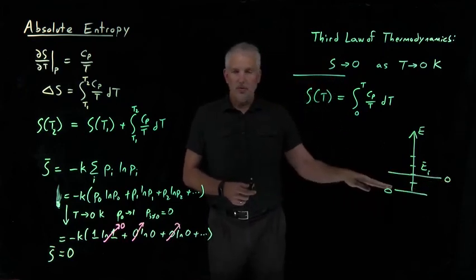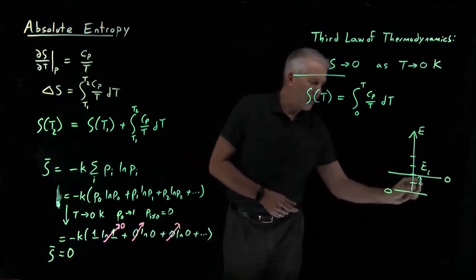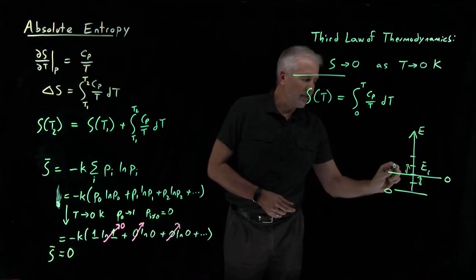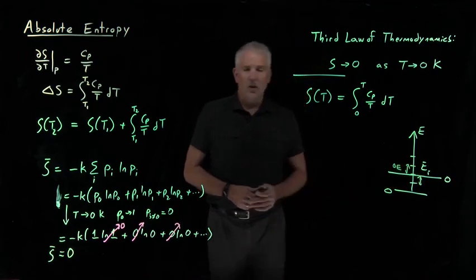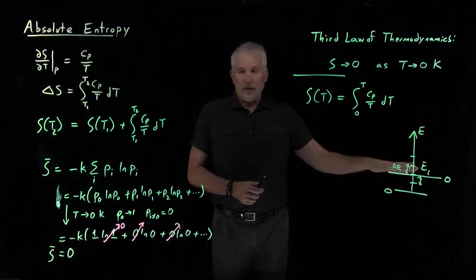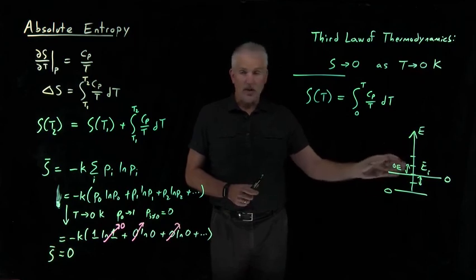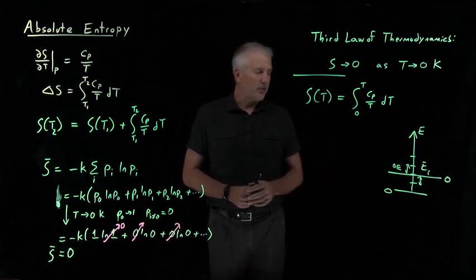I can choose the zero to be wherever I want. That won't change the difference in energy between any pair of these states. The difference in energy doesn't depend on where I choose zero to be. And if I change where the zero of energy is, it won't change any of the physical properties of that substance. It'll change the value that I call the energy, but it won't change any of the other physical properties.